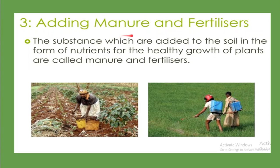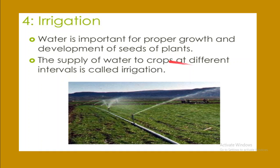The third practice is adding manure and fertilizers. The substances which are added to the soil in the form of nutrients for healthy growth of plants are called manure and fertilizers. You can pause the video and go through this paragraph again and note down the key points.